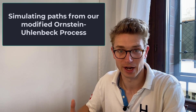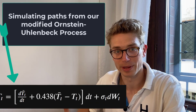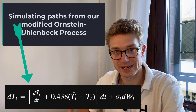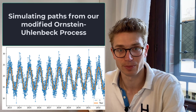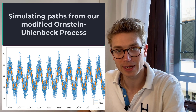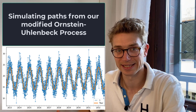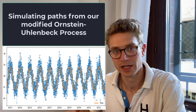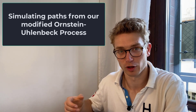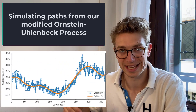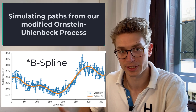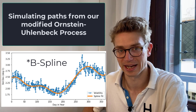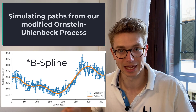In this video we're going to be continuing on with our weather derivative series, where we'll be using our modified Ornstein-Uhlenbeck process to simulate temperature paths. This is going to be under the physical probability measure, for which we've estimated our market parameters. Now that we've got our volatility model, we're going to be using a B-spline so that for a given day within the year we've got non-constant volatility incorporated into our model. So without further ado, let's get into it.